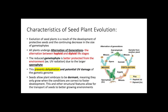Evolution of seed plants is a result of the development of protective seeds and the continuing decrease in the size of gametophytes, which are where gametes are ultimately formed. All plants undergo alternation of generations, and this is going to be true for seed plants as well.